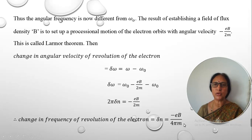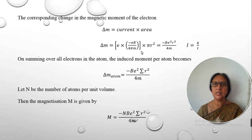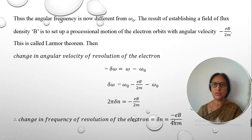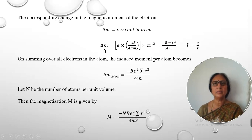Now we calculate the magnetic moment of the electron using the formula: magnetic moment = current × area. By definition, current I = q/t = e × (1/t) = e × Δn. Substituting Δn = −eB/4πm in place of 1/t, this product gives the current. For the area, we substitute πr² since the electron moves in a circular orbit of radius r. The expression reduces to the magnetic moment formula.